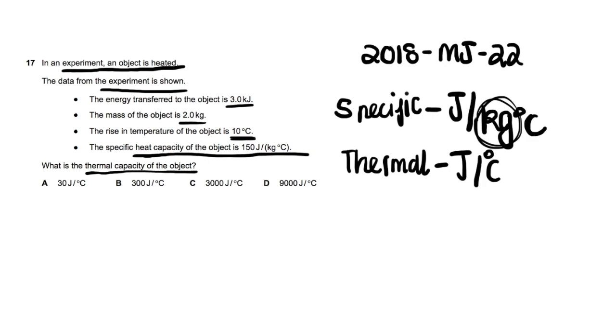I'll write down the formula in a second. The formula is that the thermal capacity of an object is equal to the specific heat capacity of the object, c, times the mass of the object. So the thermal capacity of the object is the specific heat capacity times its mass.